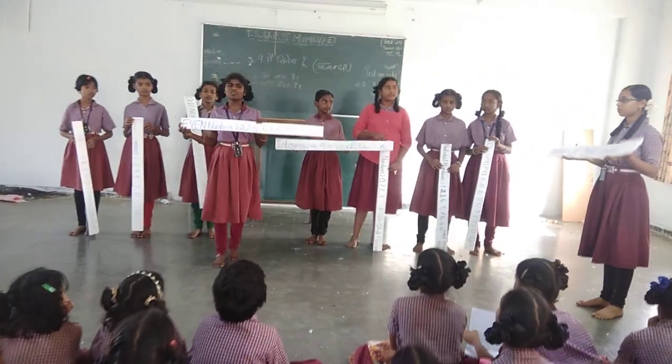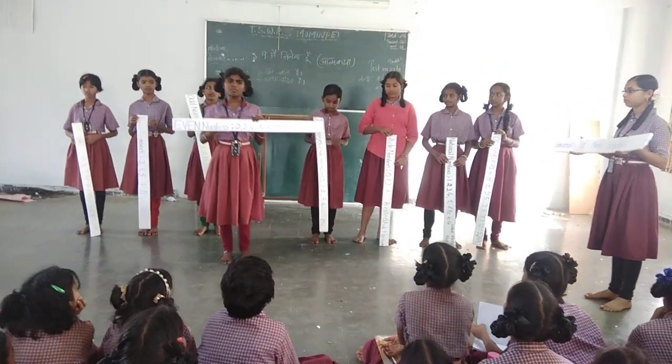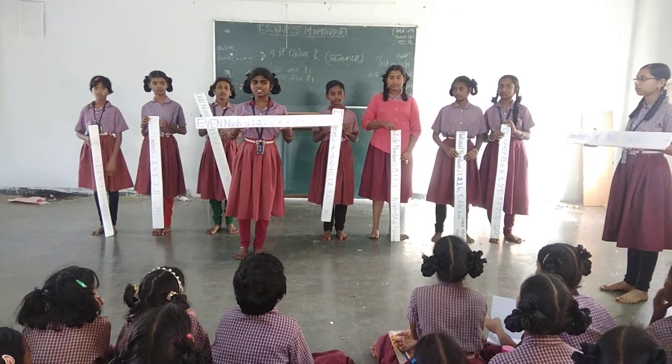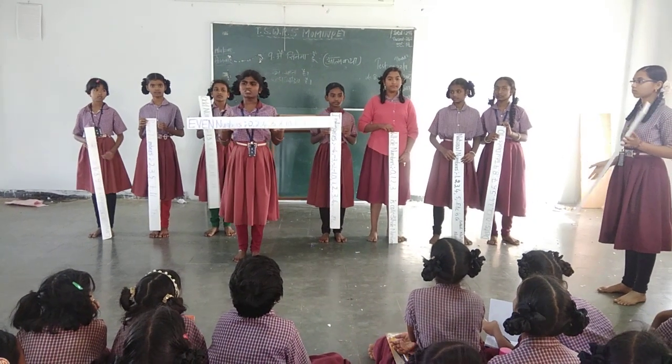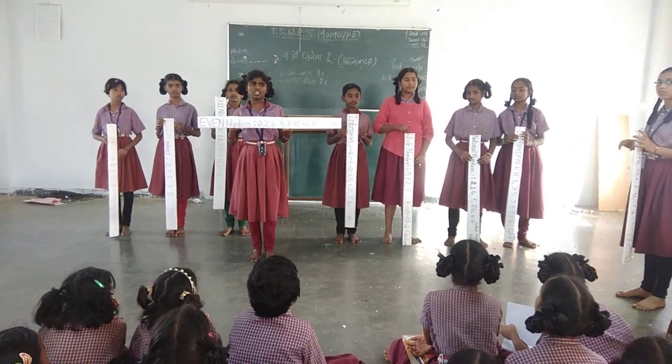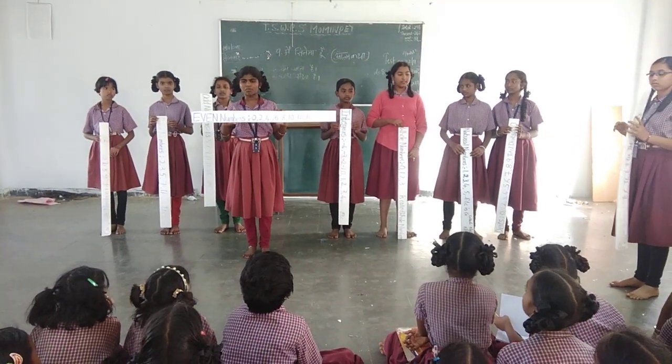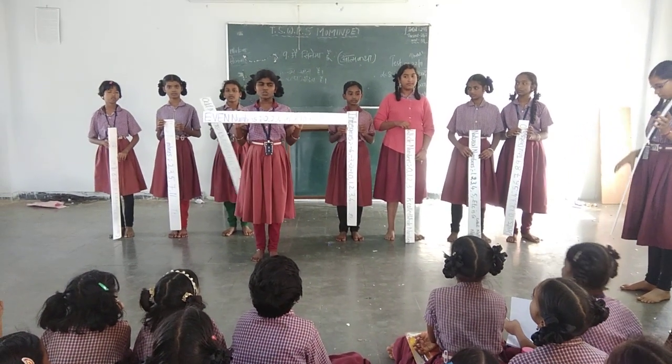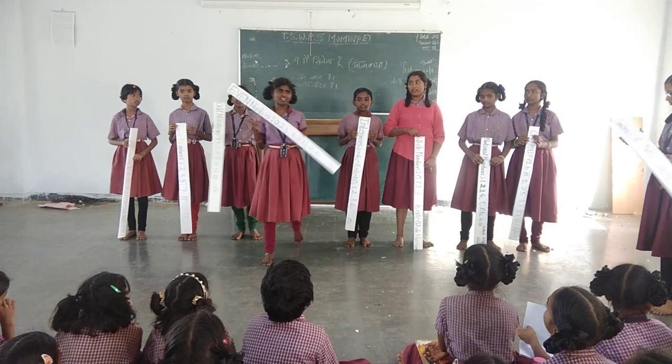Even numbers — the numbers which are exactly divisible by two are called even numbers. Examples: 2, 4, 6, 8, etc.